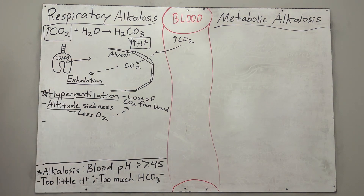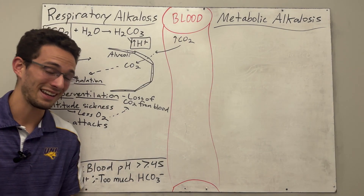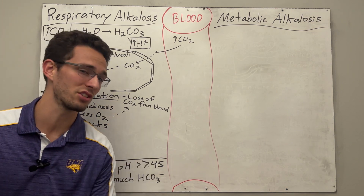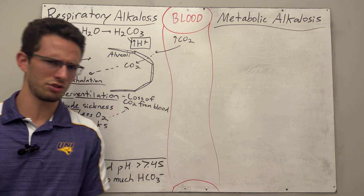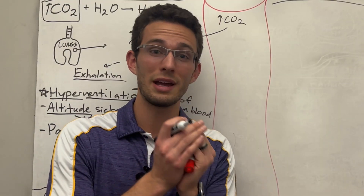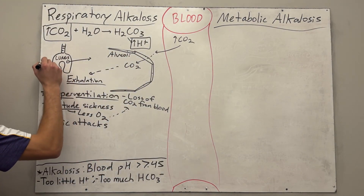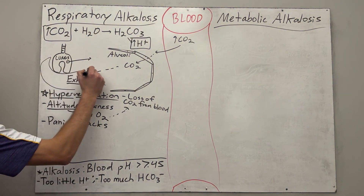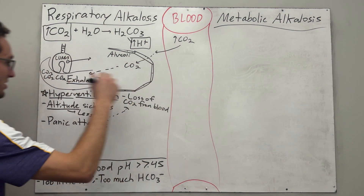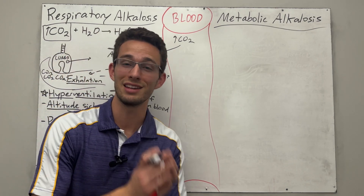Next — what else could cause hyperventilation? Probably heard of them before: panic attacks. If you're having a panic attack, it's basically anxiety where you can't control your respiratory rate, so you're just breathing rapidly, losing CO₂ through your lungs. So what should you do if you or somebody you love is having a panic attack? You should tell them to breathe into a bag. Because if you breathe into a bag, although you're losing CO₂, you're keeping it confined — it accumulates in the bag. When you breathe back in, that CO₂ travels back into the blood. So if you're hyperventilating, breathe into a bag.